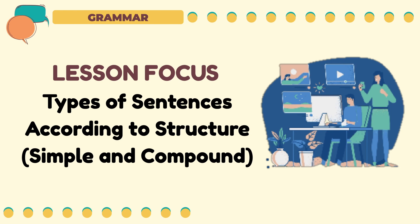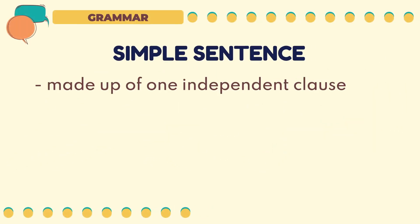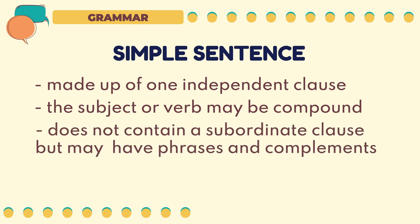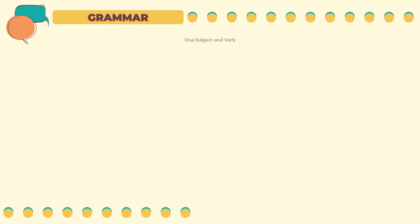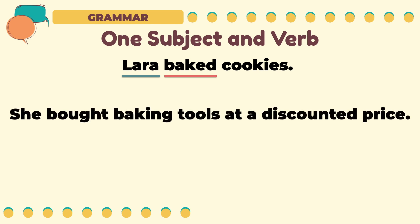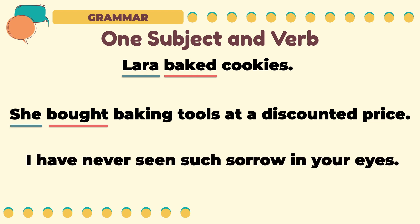Now let's focus on the different types of sentences according to structure, particularly simple and compound sentences. A simple sentence is made up of one independent clause. The subject or verb may be compound, meaning there could be two or more subjects or verbs in a simple sentence. It does not contain any subordinate clause but may have phrases and complements. A simple sentence may have one subject and one verb: 'Lara baked cookies' — subject is Lara, verb is baked. 'She bought baking tools at a discounted price' — one subject 'she,' one verb 'bought.' 'I have never seen such sorrow in your eyes' — single subject 'I,' single verb 'have never seen.'